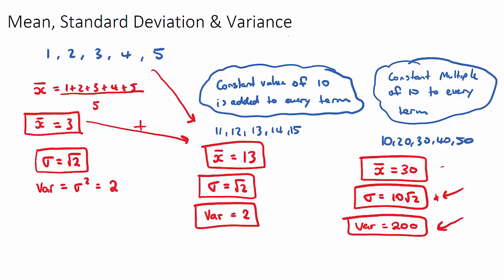And the tricky IB questions, they might not actually ask for this, they'll just straight away ask for the new variance. And you might need to think, the variance actually doesn't multiply by 10. In this case, it multiplied by 100. So it's actually going to be 10 squared, because the variance is the standard deviation squared. Good luck.